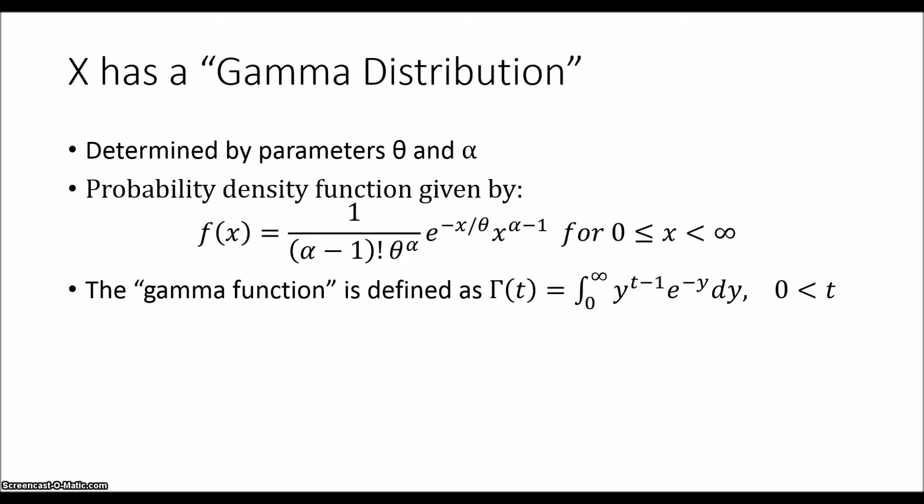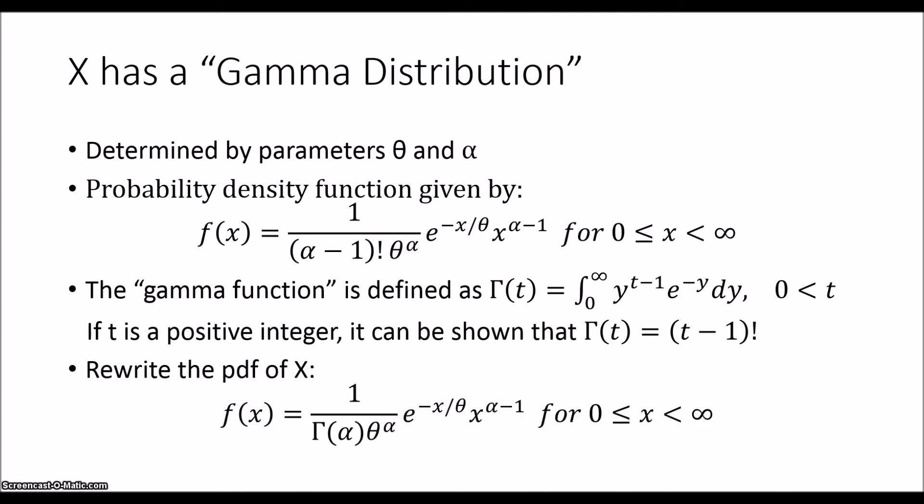Now there's a special function called the gamma function. It is defined as Γ(t) equals the integral from 0 to infinity of y^(t-1) times e^(-y) dy for t greater than 0. And if t happens to be a positive integer, it can be shown that Γ(t) equals (t-1)!. So often that (α-1)! is replaced in the gamma distribution by Γ(α).